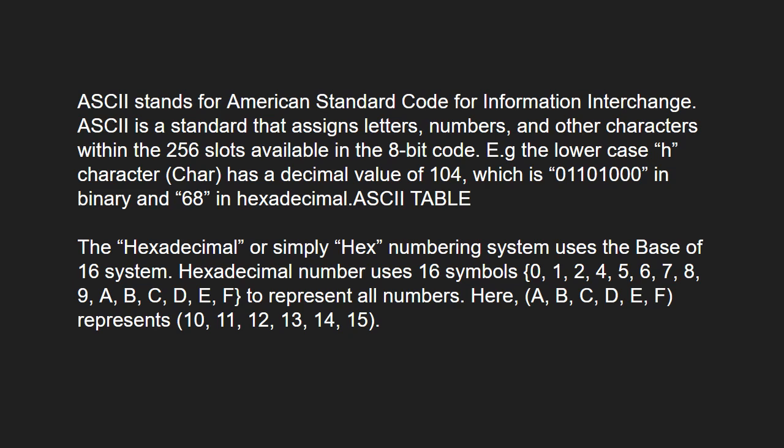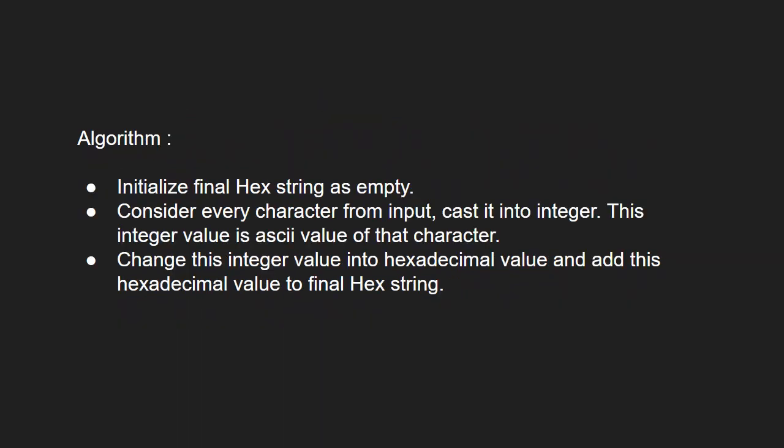Let us have a look at the approach. We initialize a hex string as empty. Consider every character from input and cast it to integer — this integer value is the ASCII value of that character. Then we change this integer value into a hexadecimal value and add this hexadecimal value to the final hex string.